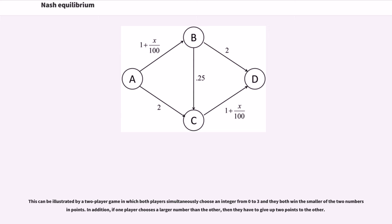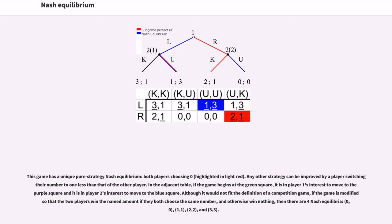This can be illustrated by a two-player game in which both players simultaneously choose an integer from 0 to 3 and they both win the smaller of the two numbers in points. In addition, if one player chooses a larger number than the other, then they have to give up two points to the other. This game has a unique pure strategy Nash equilibrium: both players choosing 0. Any other strategy can be improved by a player switching their number to one less than that of the other player. In the adjacent table, if the game begins at the green square, it is in player 1's interest to move to the purple square and it is in player 2's interest to move to the blue square. Although it would not fit the definition of a competition game, if the game is modified so that the two players win the named amount if they both choose the same number, and otherwise win nothing, then there are four Nash equilibria.